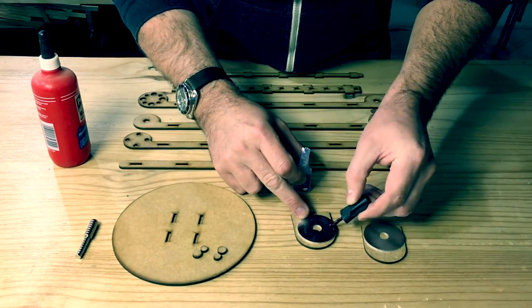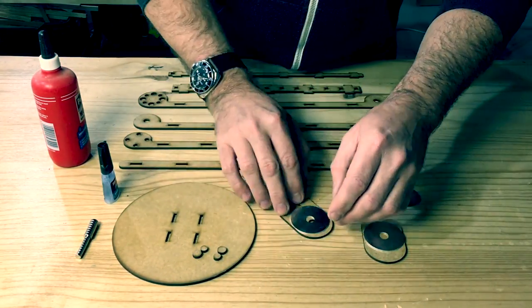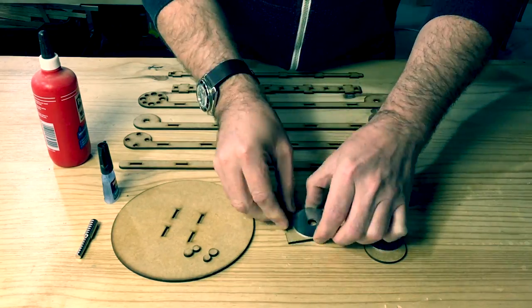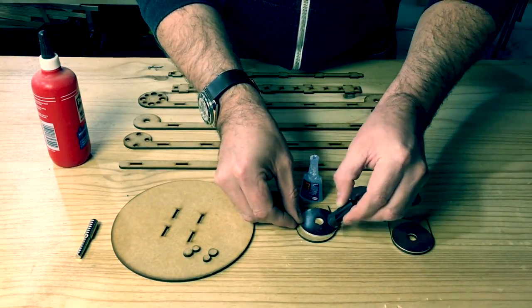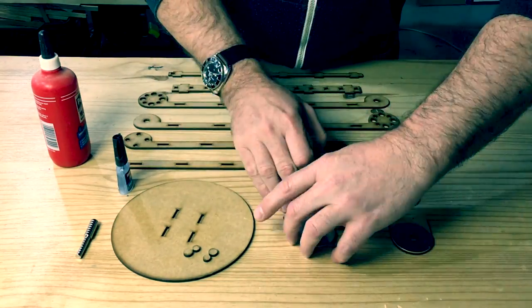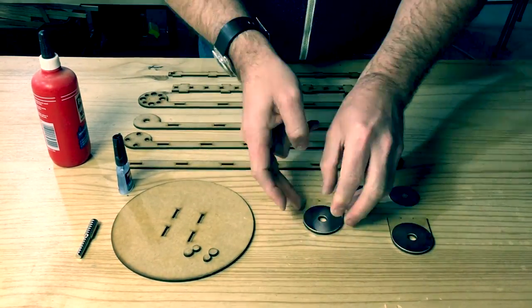For some time I've had this idea to design an articulating desk lamp that uses magnets in the joints for an easy and smooth adjustment. Well, that is at least the idea. The project is therefore experimental to try the concept and test it to see if it can work.